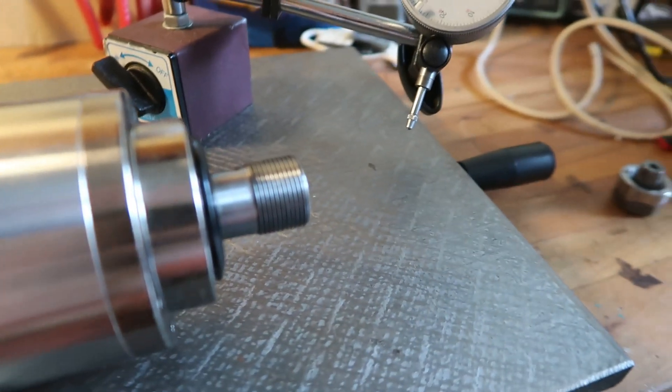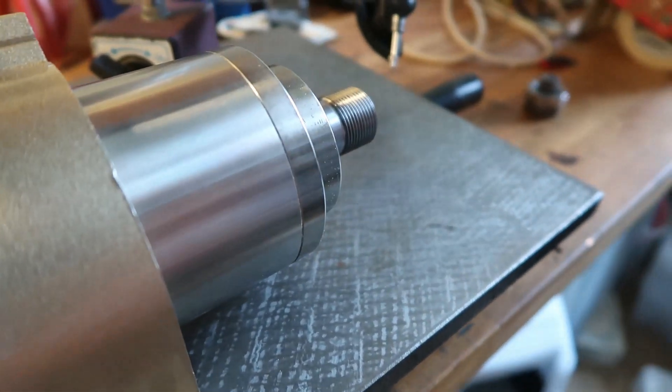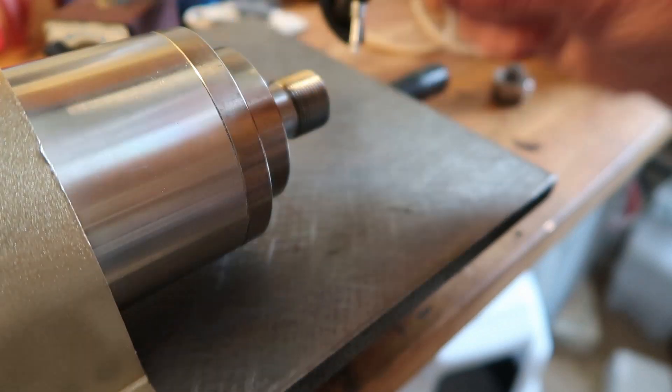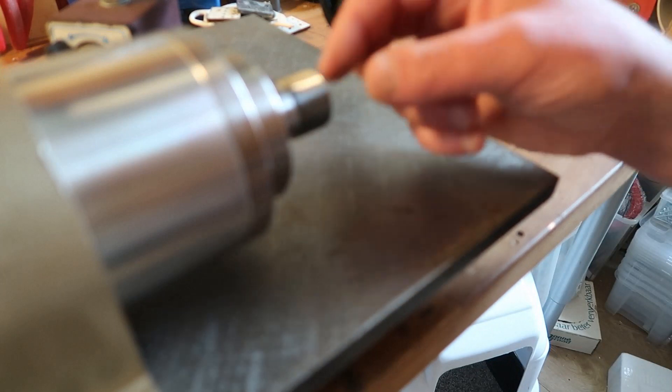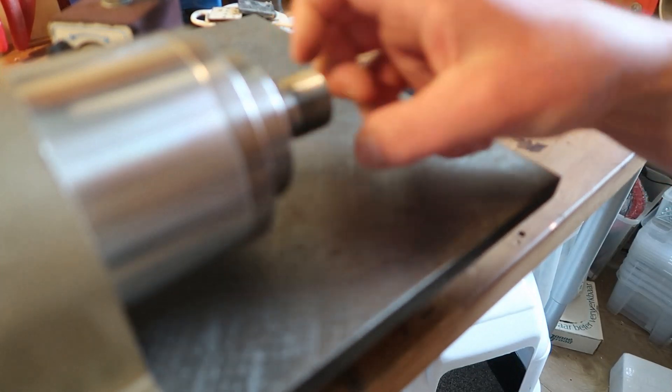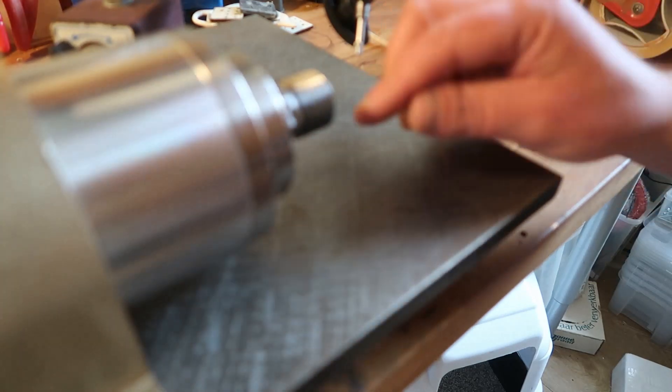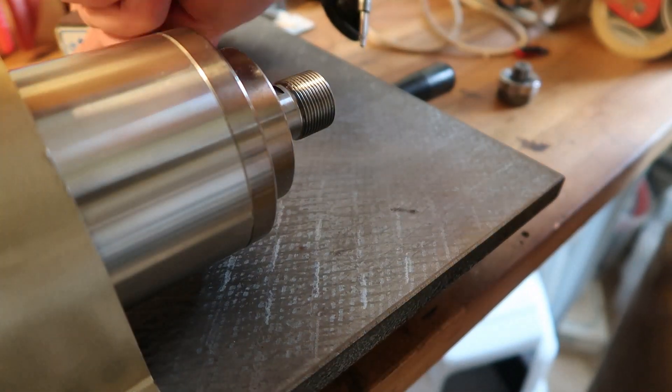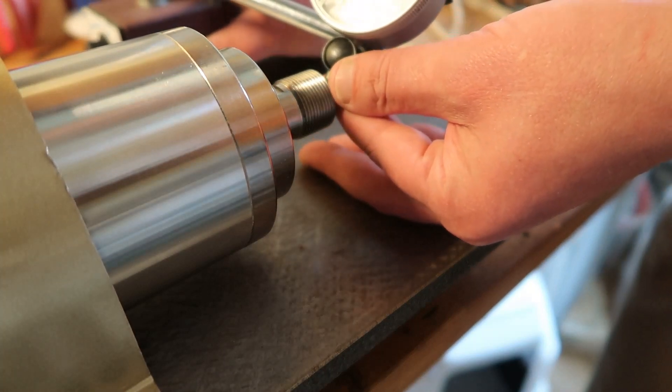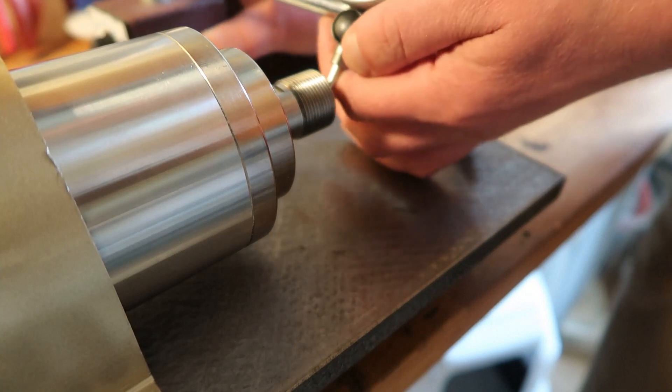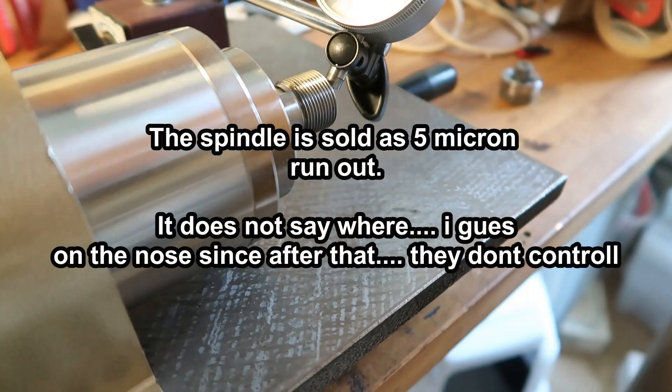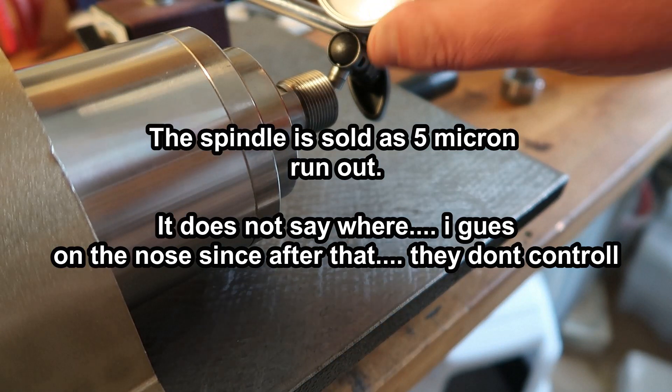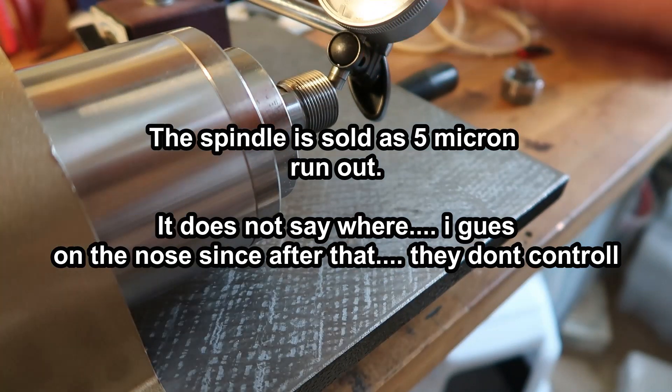So that's the deal. Now, run-out on this usually indicates how good the shaft is and the bearings and such. Well, not how good the bearings are, but at least how much run-out there is on the whole thing. So the bearings and also the machining on the spindle nose. Now this is advertised as five micron, which will be more or less less than 0.01, because that's ten micron.